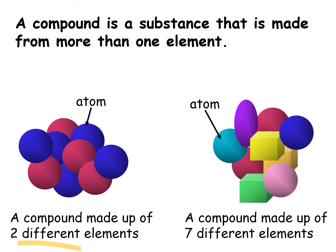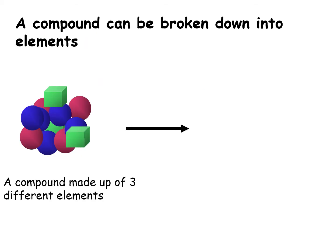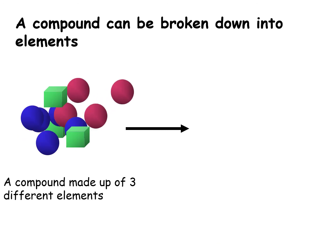A compound is made up of several different elements. This one is a compound. This one is a compound. More than one element combined into a substance is called a compound. A compound can be broken down into elements.